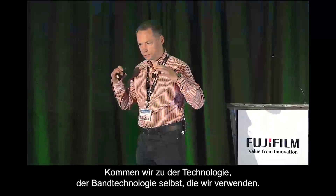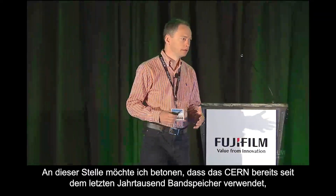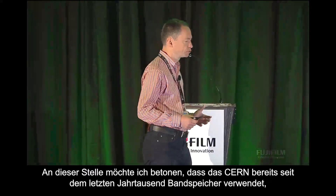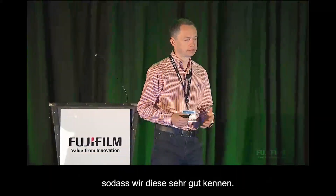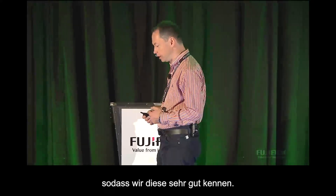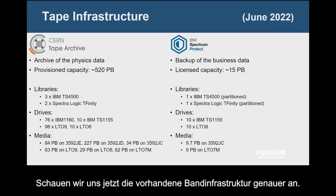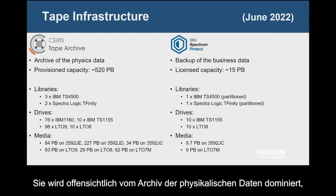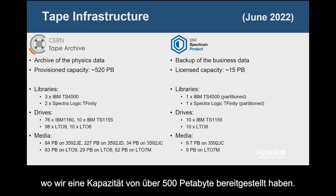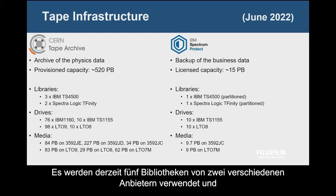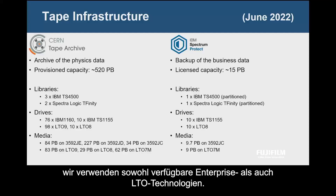Now I'm going to speak about the tape technology itself that we are using. CERN has been using tape since the last millennium and we understand it very well — it's been strategic ever since for us. Looking at the tape infrastructure, it is obviously dominated by the archive of the physics data where we have provisioned capacity of over 500 petabytes. It is using five libraries from two different vendors and we are using both available Enterprise tape and LTO technologies.